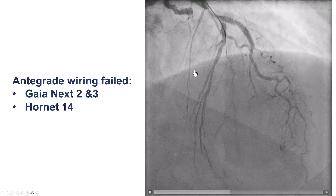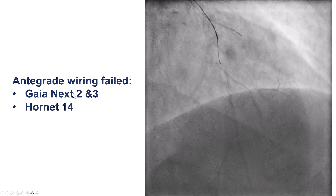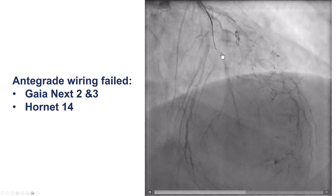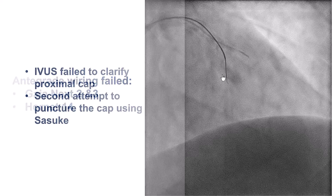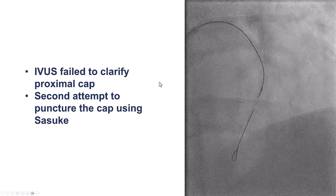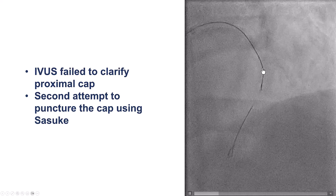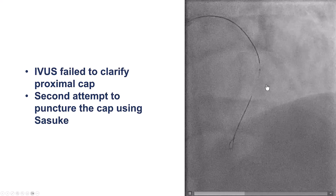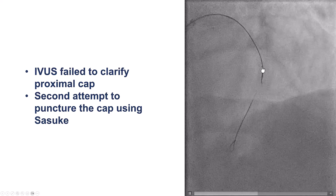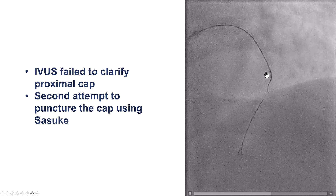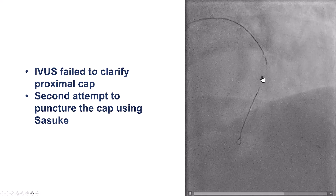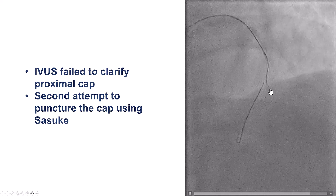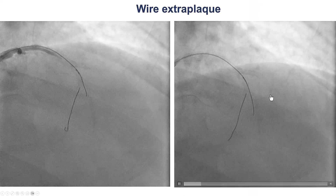We tried antegrade wiring using stiff tip wires — a GYNX 2, a GYNX 3, and a Hornet 14. The wire went into the extra-plaque position. We then tried intravascular ultrasound, but because of the calcium, we could not further clarify where the proximal cap was. We then used a dual-lumen microcatheter — a Suzuki — again with stiff guide wires, but the wire continued going into the extra-plaque space.